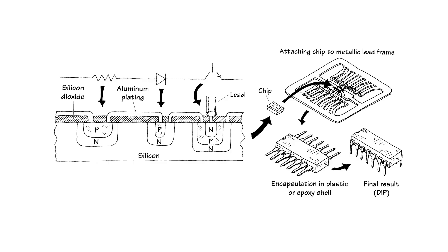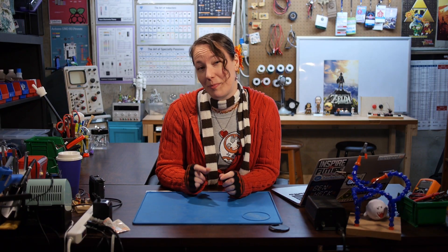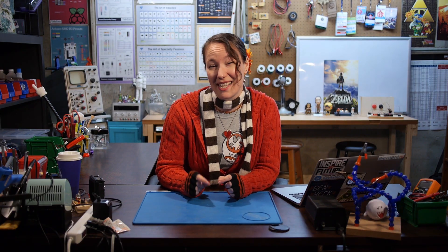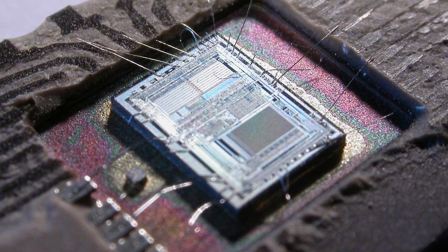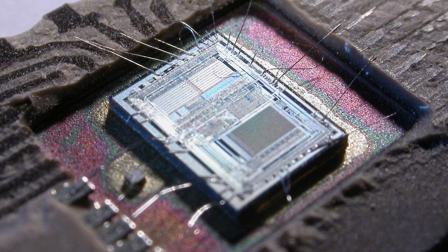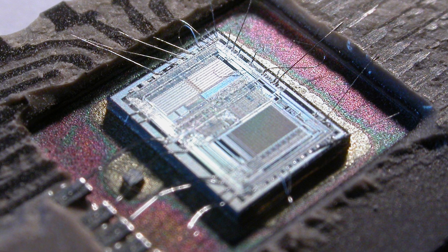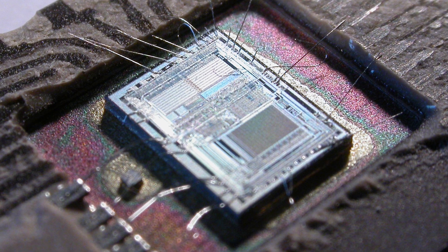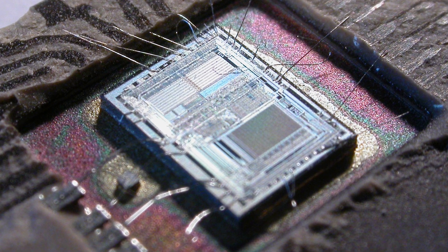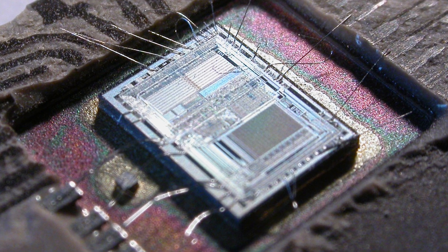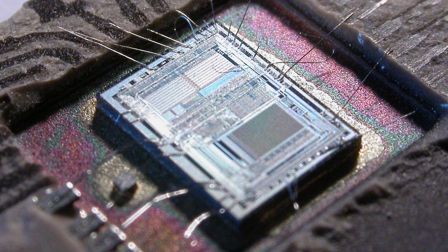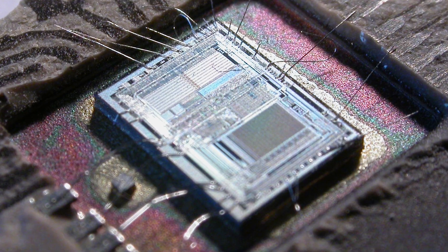They are made of tiny N-type and P-type structures, connected on the surface by aluminum plating. ICs are already pretty small, but the actual functional part of the chip inside is even smaller. The silicon chips inside the casing are so small that they have tiny wires running through the casing that connect this tiny chip to the external pins and terminals.